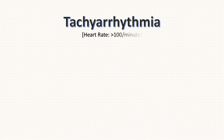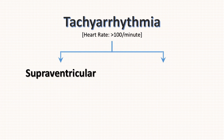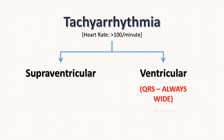What is tachy arrhythmia? It is defined by heart rate more than 100 beats per minute. Tachy arrhythmias are classified into two types: first is supraventricular tachycardia and second is ventricular tachycardia. In ventricular tachycardia, QRS complex is always wide, i.e. more than 80-100 ms.